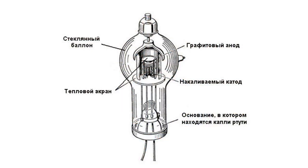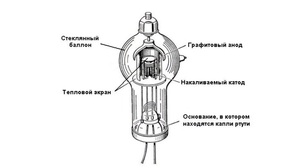A gas diode is a gas-discharged two-electrode device used as an uncontrolled rectifier with a non-self-sustained arc discharge or a self-sustained glow discharge in anode gases or mercury vapors. It was developed by the American scientist Hale in 1905. A gas diode is a glass container filled with mercury vapors or inert gases under low pressure, with two electrodes: an anode and a hot cathode.